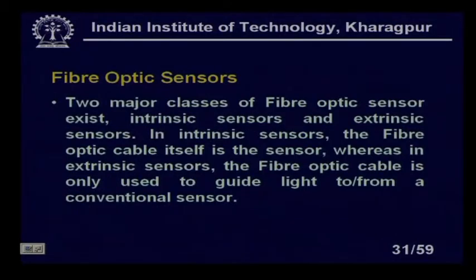There are two major classes of fiber optic sensors: intrinsic sensors and extrinsic sensors. In intrinsic sensors, the fiber optic cable itself is the sensor. In extrinsic sensors, the fiber optic cable is used only to guide light to and from a conventional sensor. One example of extrinsic sensing is measuring jet engine exhaust temperature using an optical pyrometer where thermocouple will not work due to extremely high temperature.